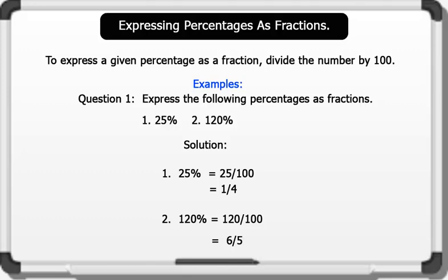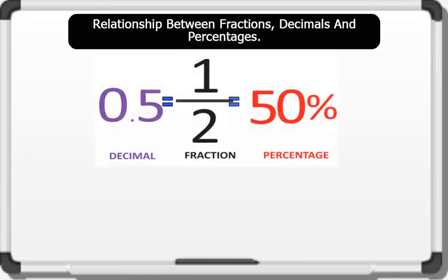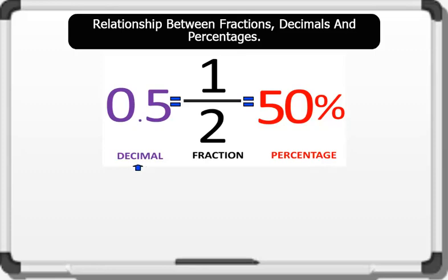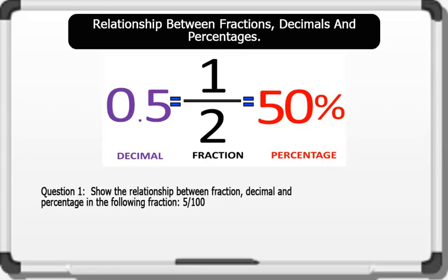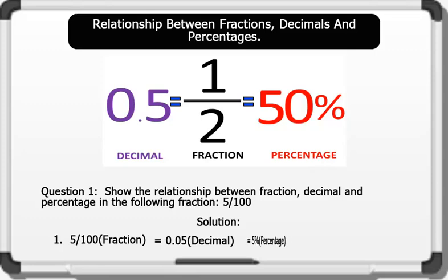Now let's see the relationship between a fraction, a decimal, and a percentage. The relationship between fractions, decimals, and percentages can be illustrated using the diagram on the board, where 0.5 as a decimal equals 1 over 2 as a fraction and 50% as a percentage. Question: Show the relationship between fraction, decimal, and percentage for 5 over 100. Solution: 5 over 100 in fraction equals 0.05 in decimal, and is also 5% in percentage.